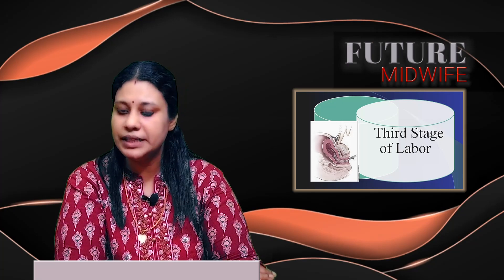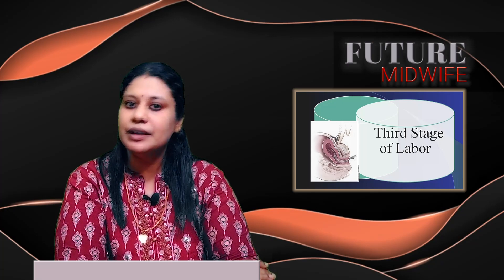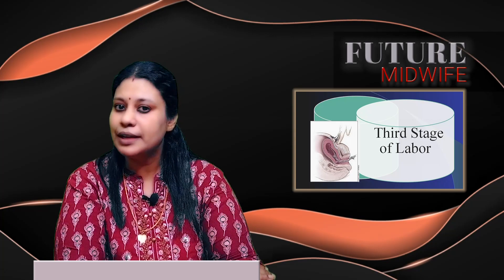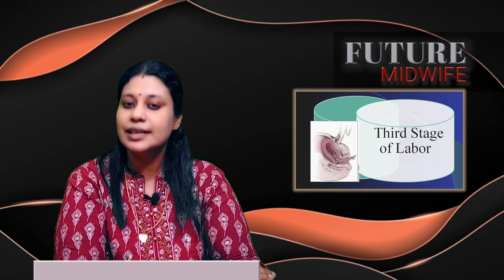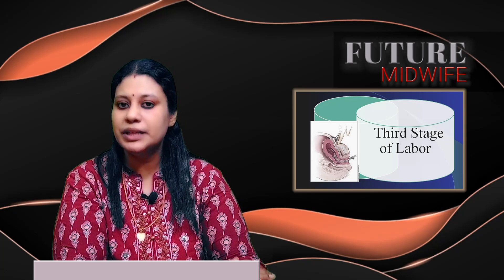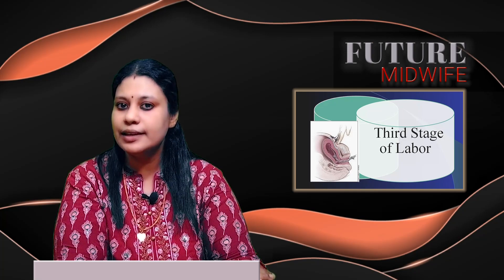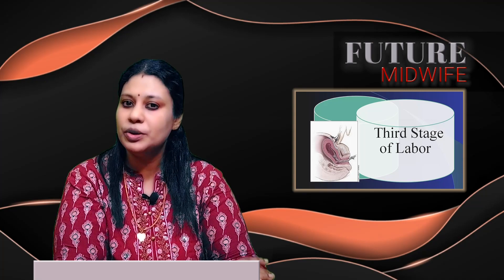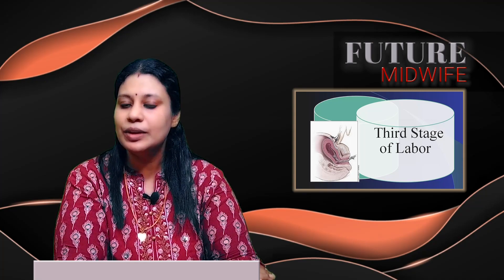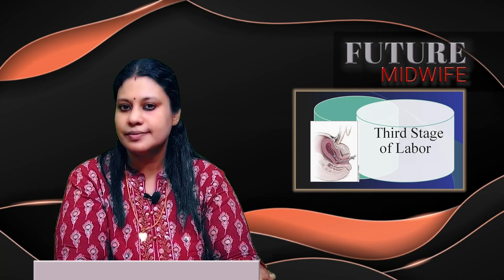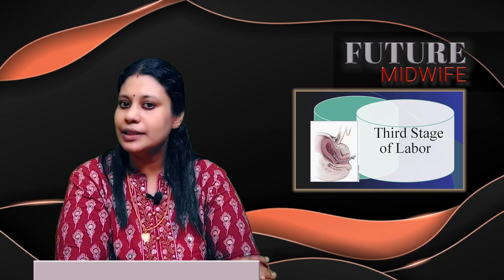After the delivery of the fetus, the uterus gets retracted and the placental bed gets diminished, so the placenta starts to expel from the uterus. There are two mechanisms of placental separation: the primary mechanism, where the total surface area of the placental site gets reduced as the uterus shrinks, and the secondary mechanism, where a hematoma forms due to vascular occlusion and rupture of the placental bed due to uterine contraction.